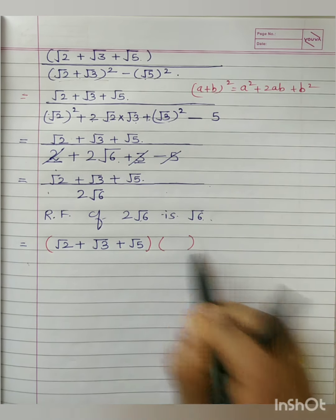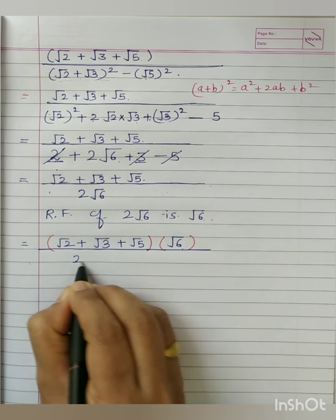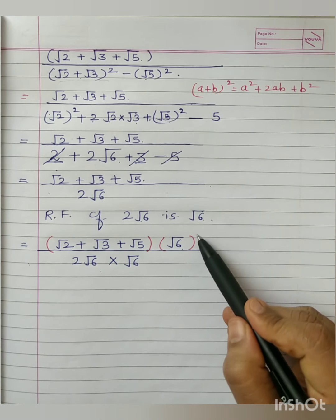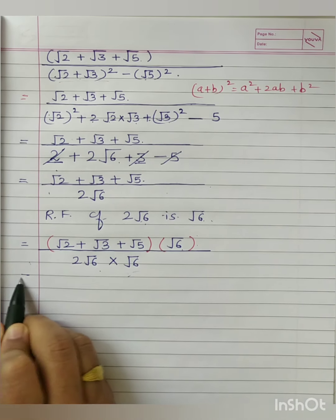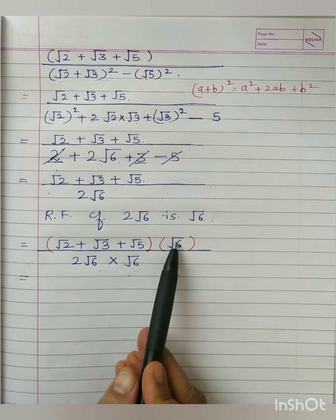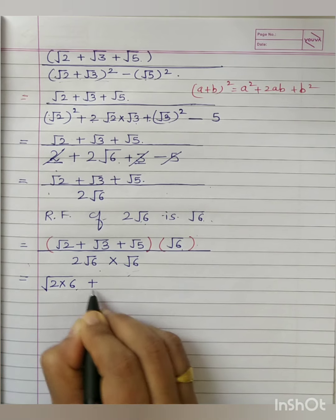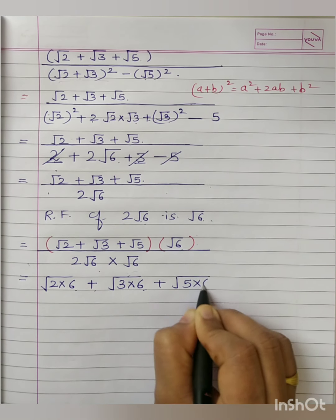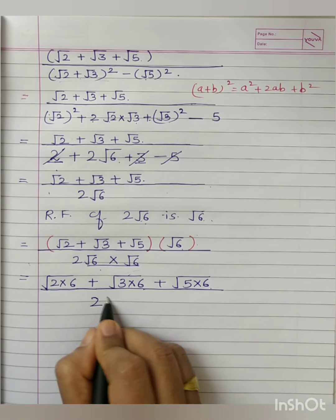The moment we multiply by root 6 we must use brackets. So the numerator is (root 2 plus root 3 plus root 5) multiplied by root 6, and the denominator is 2 root 6 — which is a monomial — multiplied by root 6. Both numerator and denominator are multiplied by root 6 because it is the RF for 2 root 6. Since all terms have order 2, root 6 multiplies each: root (2 times 6) is root 12, root (3 times 6) is root 18, root (5 times 6) is root 30, all upon 2. Root 6 times root 6 gives 6; and 2 times 6 is 12.